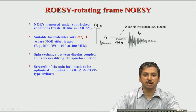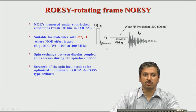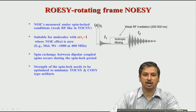In a ROESY spectrum, spin exchange — that is, polarization transfer — takes place during the period known as the spin lock period. This spin lock involves isotropic mixing, which is what we saw in TOCSY. During this period the transfer is ongoing. Because TOCSY and ROESY have the same pulse program, one has to optimize the spin lock so that you do not start seeing TOCSY peaks or TOCSY-type artifacts in the ROESY.